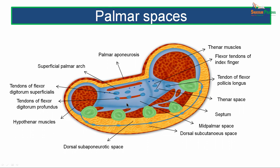The thenar space lies between the lateral septum and the intermediate septum, while the mid-palmar space lies between the intermediate septum and the medial septum. On the dorsal aspect are the metacarpal bones with muscles in between, and most dorsally we see two dorsal spaces — the dorsal subcutaneous space and the dorsal subaponeurotic space.